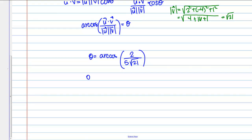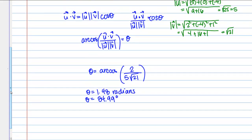So it looks like for theta, we get approximately 1.48 radians. Or in degrees, that is 84.99 degrees. So this is the angle between the vectors, u and v, computed by using the dot product.